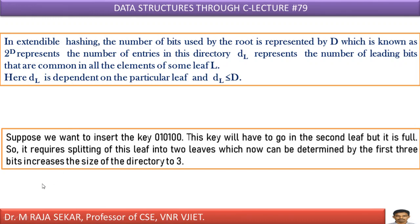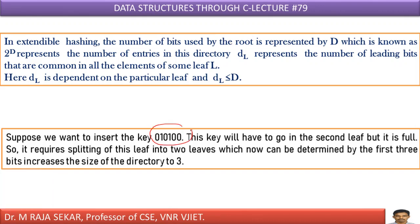Let me explain this with one numerical example. Suppose we want to insert a particular key — a six-digit key. This key will have to go into the second leaf, but it is full. What is the reason why it has to go to the second leaf? I will discuss. So it requires splitting. It requires splitting of the leaf node into two leaves.